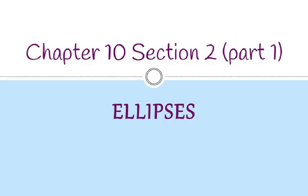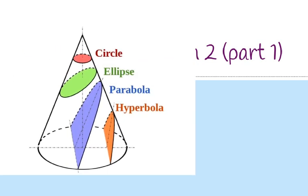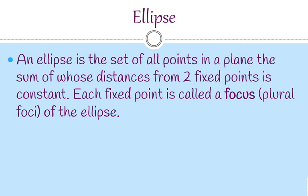Next we're going to start the notes for chapter 10, section 2, which is ellipses. If we remember the image of the conics from the beginning of the parabolas section — parabolas were in purple — now we're talking about ellipses. Ellipses are basically like ovals, almost like a circle, except it won't be the same distance in either direction. By definition, an ellipse is the set of all points in a plane the sum of whose distances from two fixed points is constant. Each fixed point is called a focus, and the plural is foci.